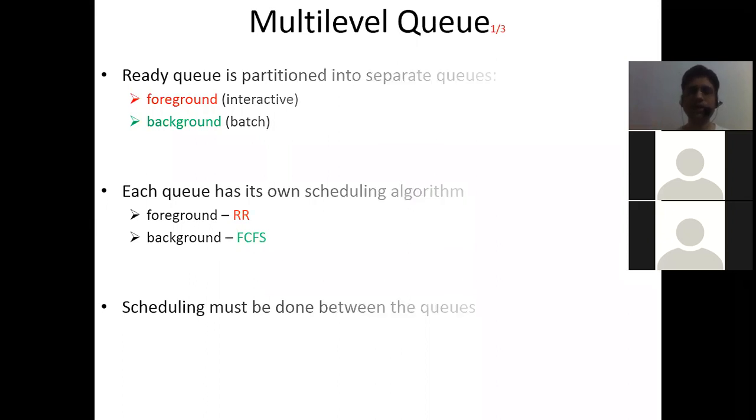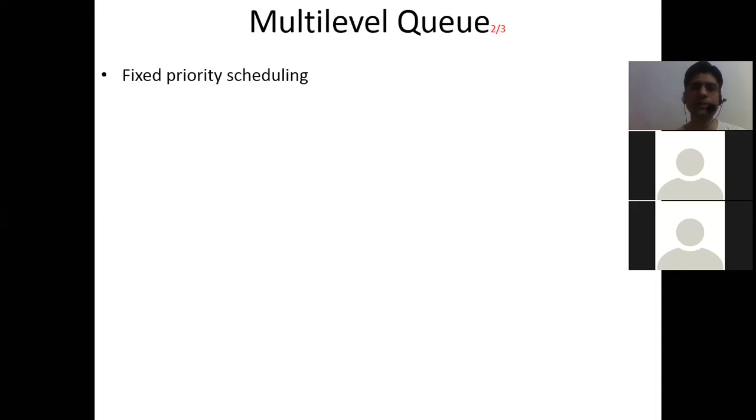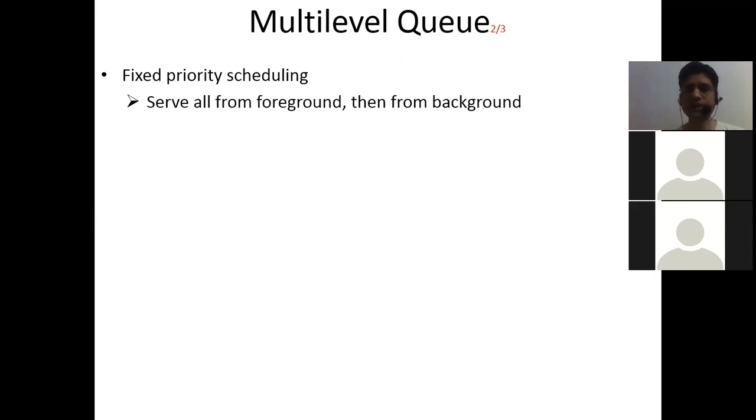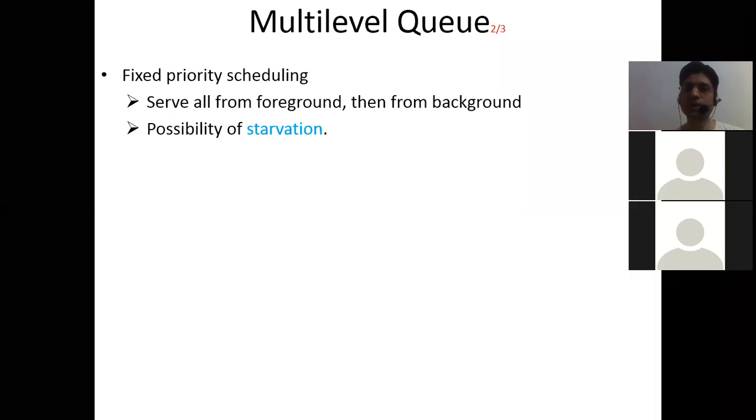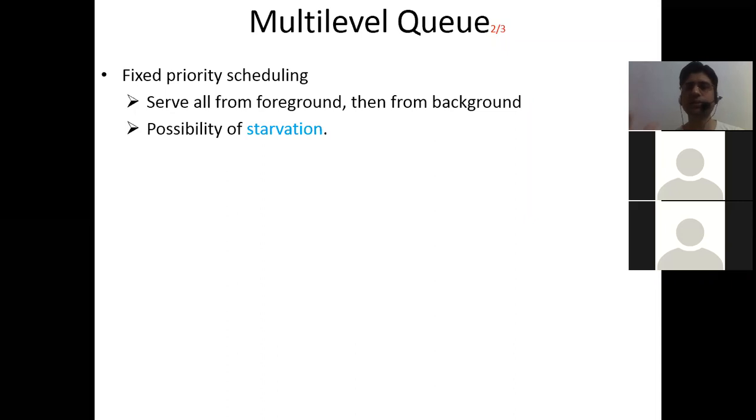The first thought was to do fixed priority scheduling. Since we are much more interested in interactive processes — as I am your foreground process speaking to you — we can assign a fixed priority: firstly go for foreground, then go for background. But what will happen? If there are many foreground interactive processes coming, you are giving them the whole CPU time, and the background processes are still waiting. This causes starvation. And if you are applying fixed priority scheduling, there is also a problem of starvation.